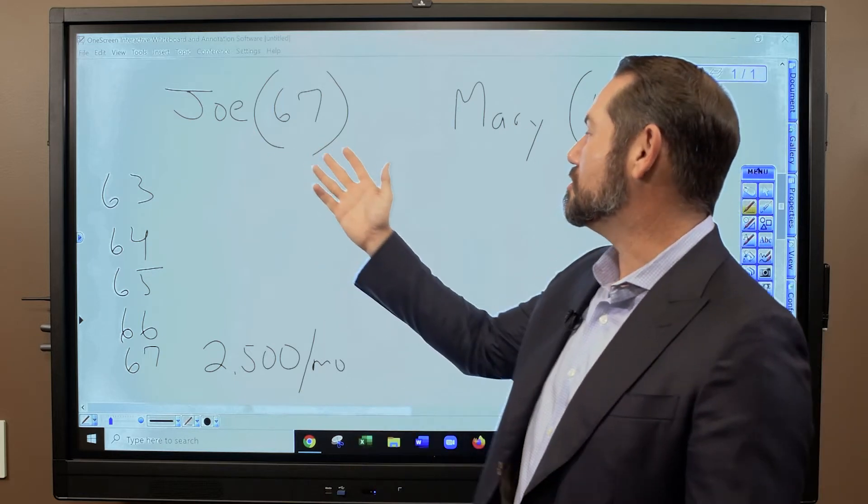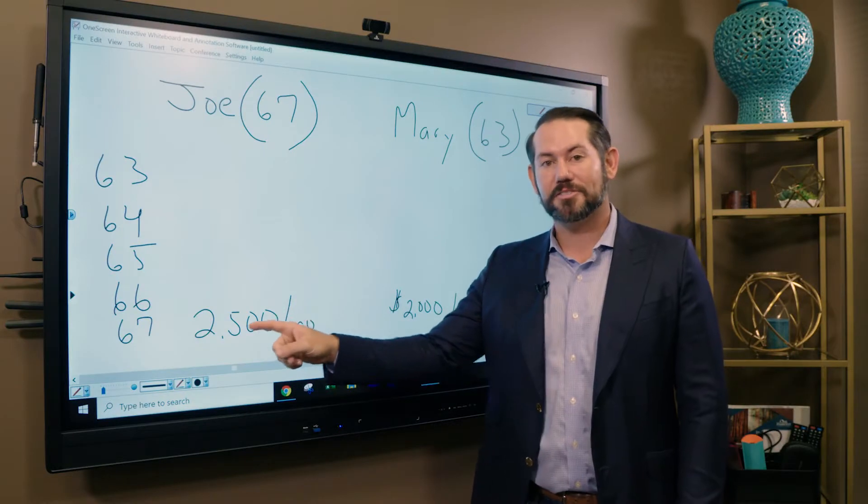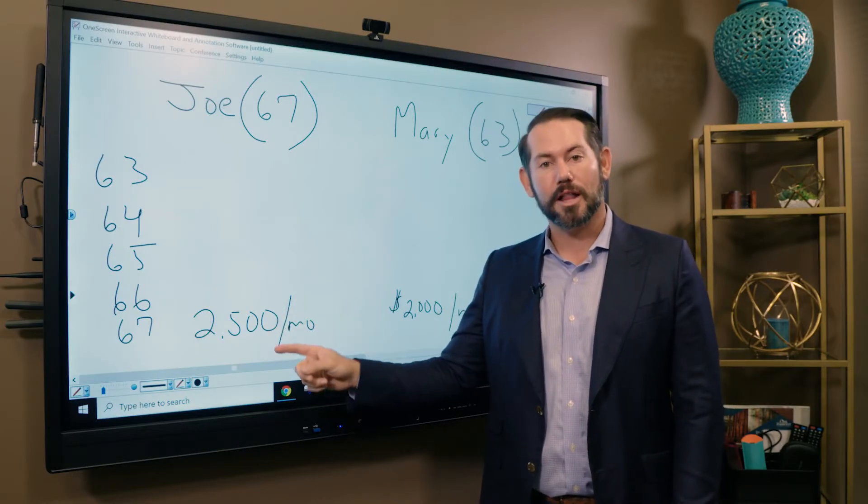So in this example, we have Joe who's 67 and Mary who is 63. Joe takes his full retirement age benefit at 67 of $2,500 per month.